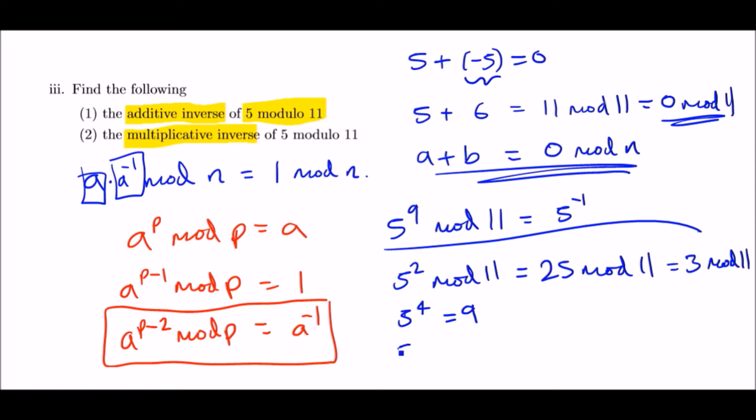81 mod 11, do the same thing, keep subtracting 11, and eventually you should be left with 4. Finally, to get 5 to the power 9, we can say 5 to the power 8 times 5 to the power 1.